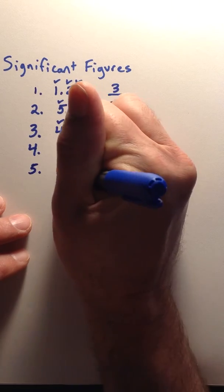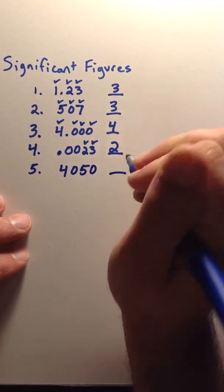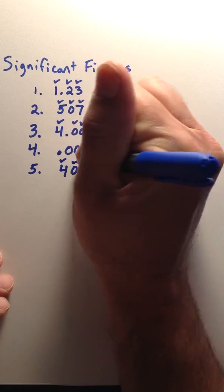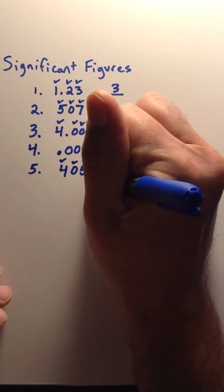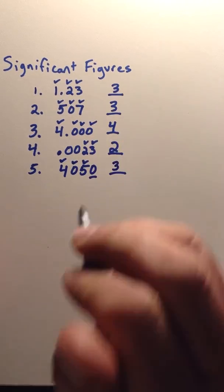The fifth type would be in front of the decimal. For example, 4,050. You would have a non-zero, a non-zero, a sandwich zero. But the last one is just a placeholder. So you would only have three significant figures.